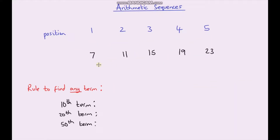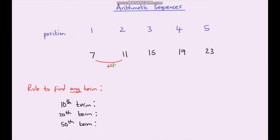Now it's your turn. Have a go at trying to work out what the rule is to find any term in this sequence, then write it down and using your rule have a go at working out the tenth term, the twentieth term and the fiftieth term. So let's go through this together. This is an arithmetic sequence because it goes up by the same amount each time. To go from seven to eleven we add on four, from eleven to fifteen we add on four, from fifteen to nineteen we add on four, and from nineteen to twenty-three we also add on four.